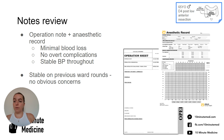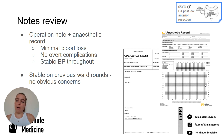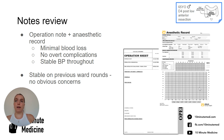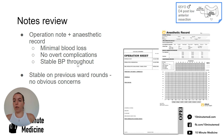Looking at the anaesthetic chart is also really useful. You can tell how stable their blood pressure has been through the operation and whether they've needed any fluids, any blood, any metaraminol. That's all important information because if they've had a labile blood pressure throughout or lots of bleeding, it will worsen their outcomes post-operatively. Looking at our patient, he's had minimal blood loss, no overt complications, and a stable blood pressure throughout. On previous ward rounds, colleagues have said he's recovering normally post-operatively.